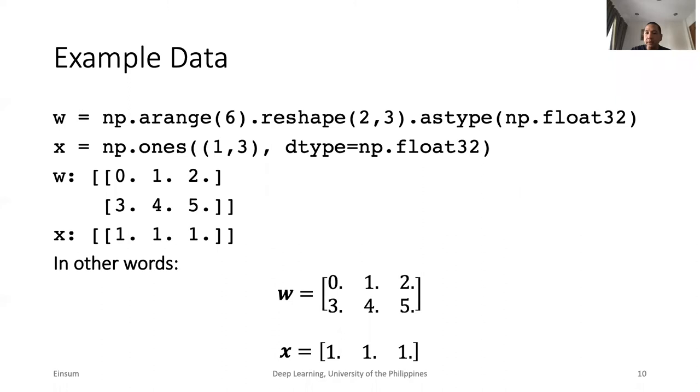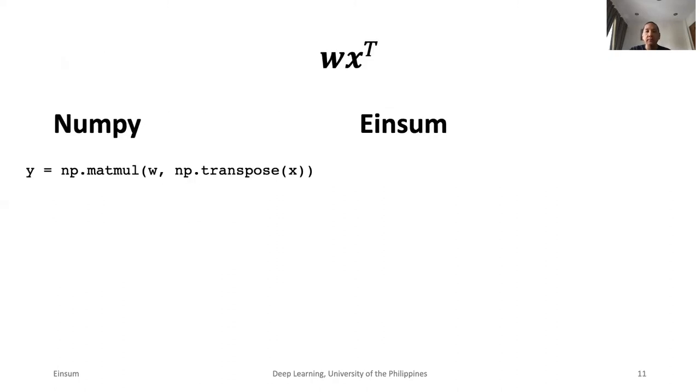Let us synthesize another set of data. Suppose X is 1 by 3 instead of 3 by 1. In this case, we cannot directly multiply W and X without first transposing X. In order to solve this problem, we use the transpose method in NumPy. But what about in EinSum? Everything is the same, except that we interchange the position of K and J as shown in red.